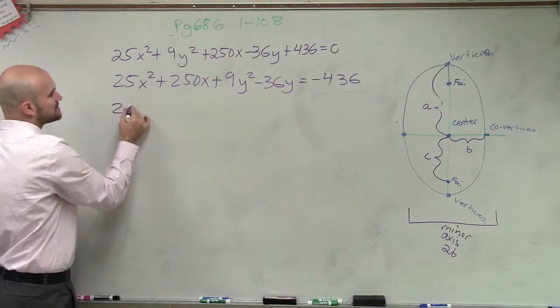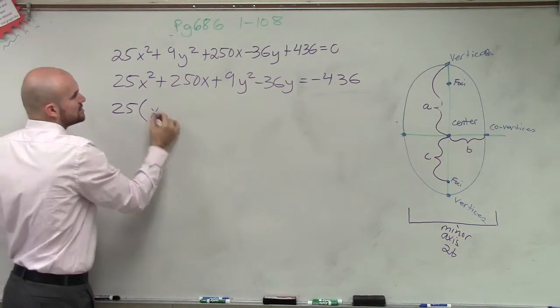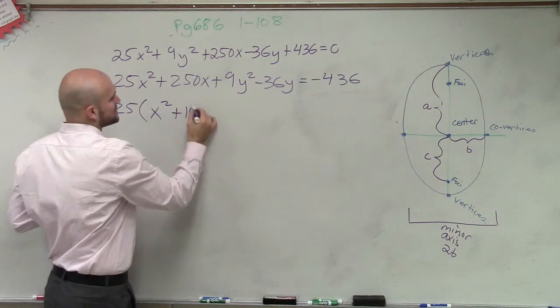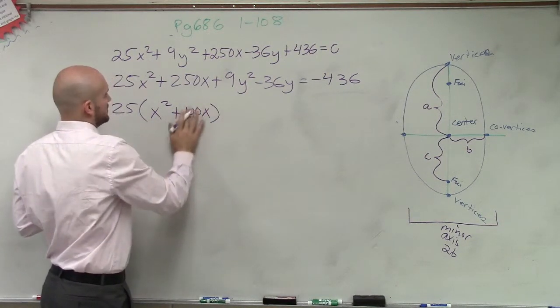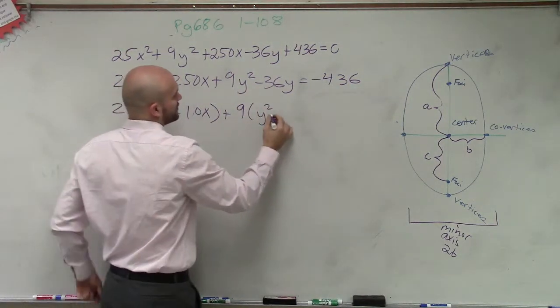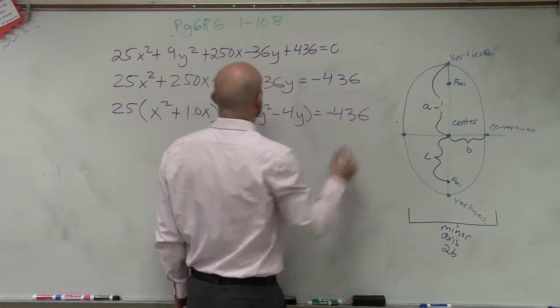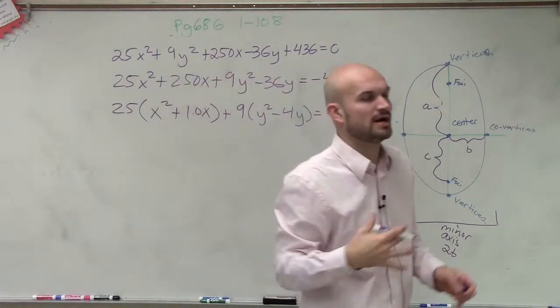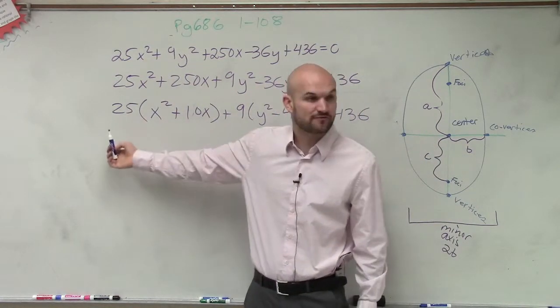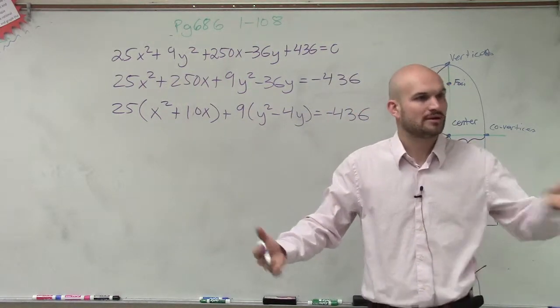So to complete the square, now that at least the x's and the y's are organized together, now they could factor out those common terms. Because remember, you can't complete the square when you have your coefficients of your quadratic terms. So I have 25 times x squared plus 10x, plus here, I have to factor out a 9, y squared minus 4y. You could, but for completing the square, that's not what we're trying to obtain. We're not trying to factor, we're just trying to factor out that first term out of the first two, because when completing the square, we want to create a perfect square trinomial.